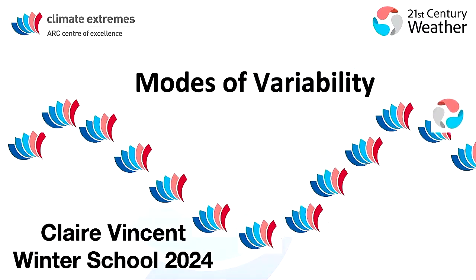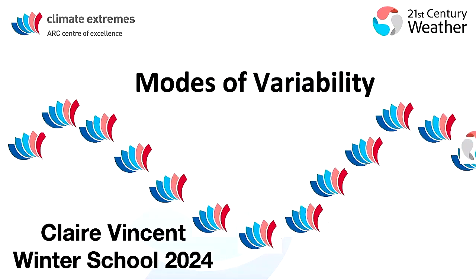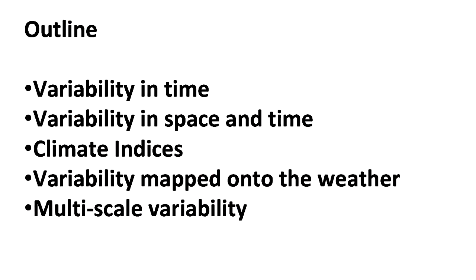So I'm going to talk about modes of variability today, and this is one of those topics where you go, 'Oh yeah, modes of variability — that's like ENSO and MJO and SAM and all that stuff,' and then you start thinking about it and go, 'Yeah, actually what is it? How do we define what these modes of variability really are?' I'm going to start by taking a step back and talking about variability by itself in time, and then expand out to variability in space and time together.